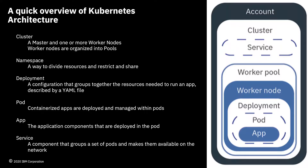A deployment is a Kubernetes resource where you specify information about other resources required to run your application — the different services your application might need, things like persistent storage, CPU and RAM requirements. The deployment itself is documented in a YAML file. YAML stands for YAML Ain't Markup Language. This file is a human-readable configuration file which you use to make an application or other resource available through Kubernetes.